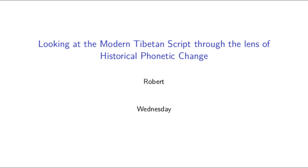I've noticed that many people seem to have the idea that the Tibetan writing system is this super crazy inconsistent mess, in particular because its spellings, when converted into the Latin alphabet, often do not seem to line up with the pronunciations in a way which we are used to. When you write out in Latin characters the most canonical direct transliteration of a word, it certainly seems like a strange system to use.